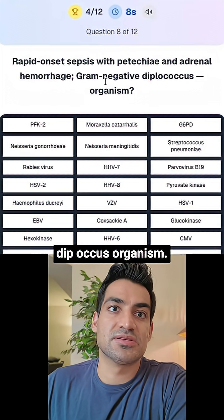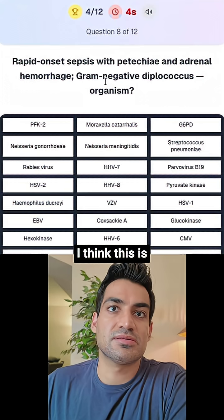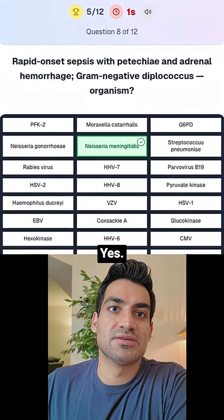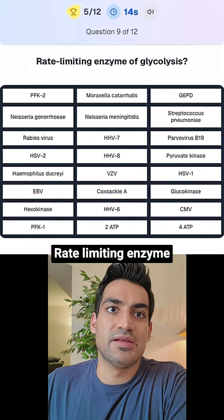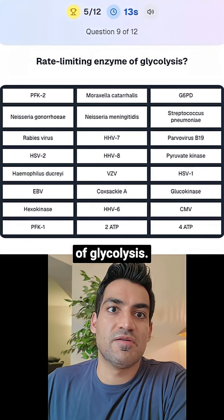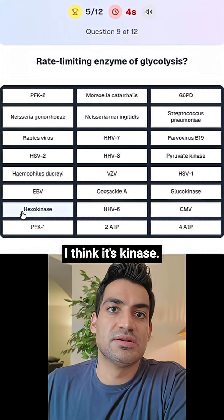That gram-negative diplococcus causing meningitis is Neisseria meningitidis. Rate-limiting enzyme of glycolysis — I initially thought hexokinase or glucokinase, but it's PFK-1. I forgot that one.